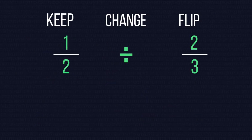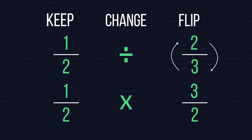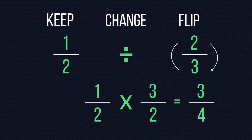So to divide we use keep change flip. This means that we keep the first fraction the same. We change the divide symbol for a multiplication symbol and we flip the second fraction upside down. We then multiply the fractions together as before.